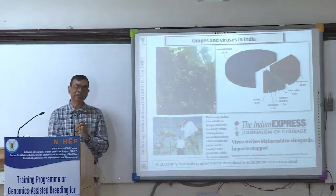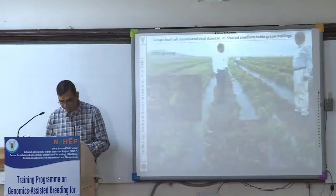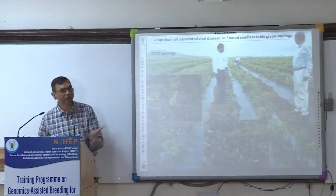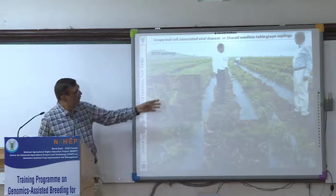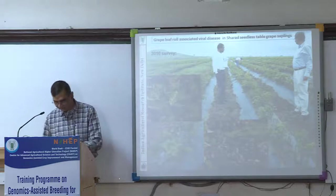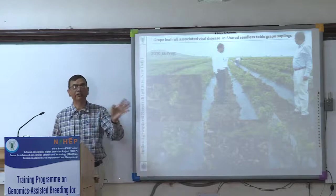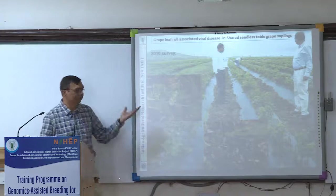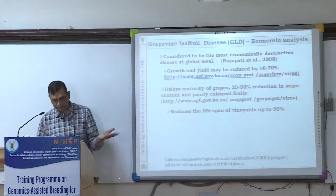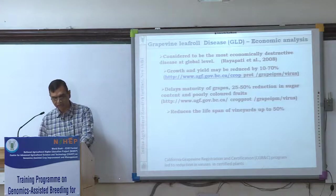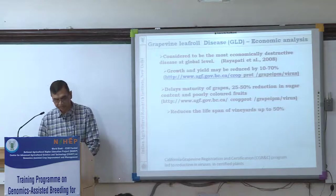We procured anti-sera. You can see leaf roll symptoms — reddening and rolling. This nursery picture from Maharashtra in 2010 shows all plants were infected. When these plants go to the farmers, they are all infected because they have not been indexed or tested. Leaf roll disease can cause growth and yield reduction of 10 to 70%, delayed maturity by 25 to 50% reduction in sugar content, and life span reduction of up to 50%.